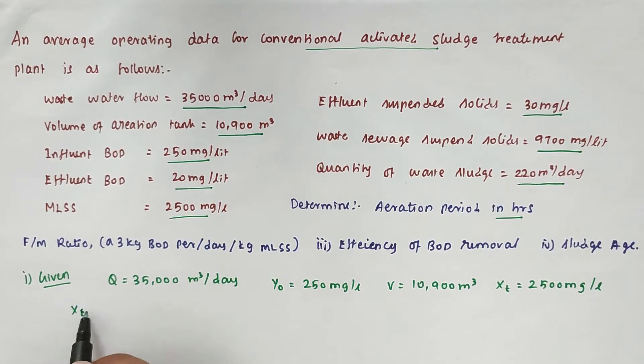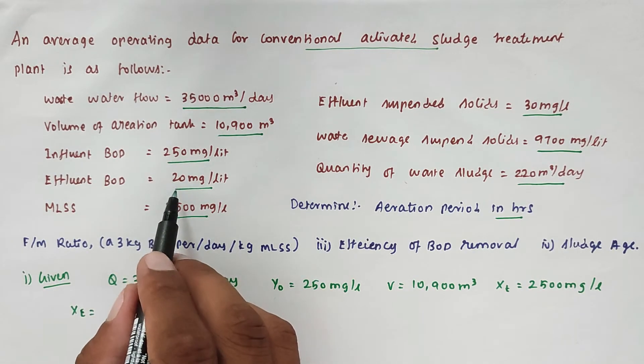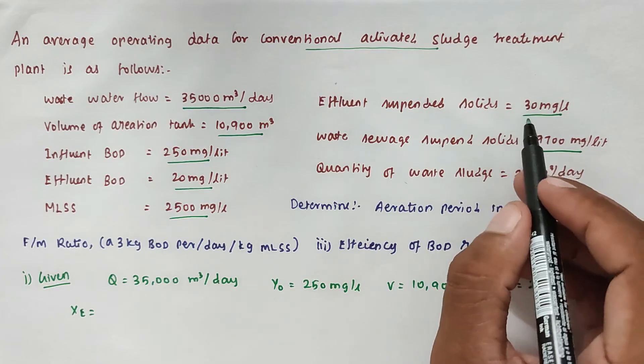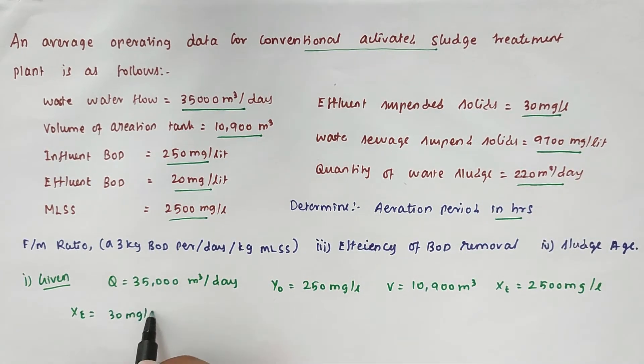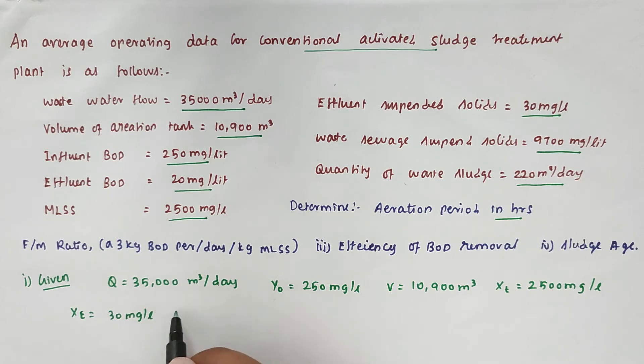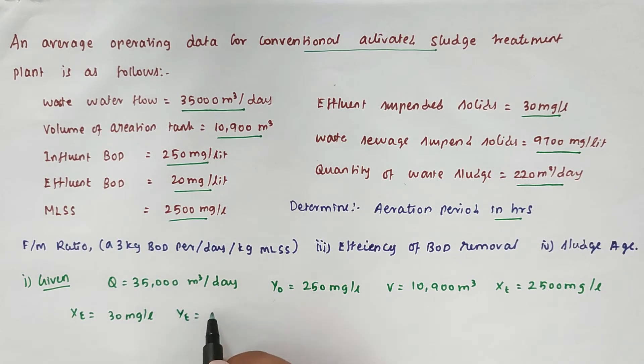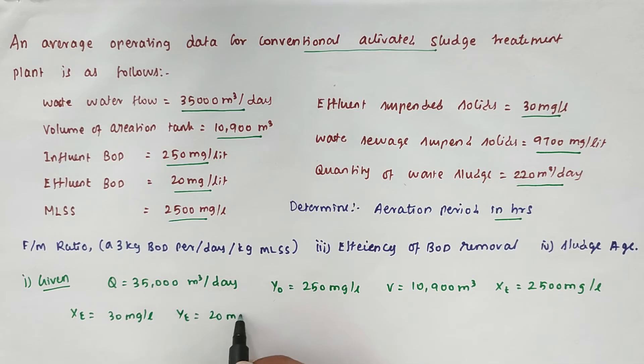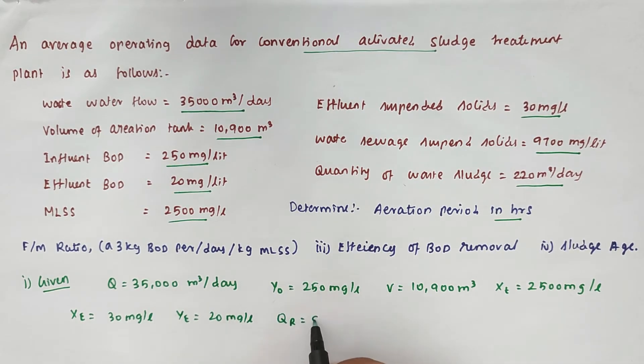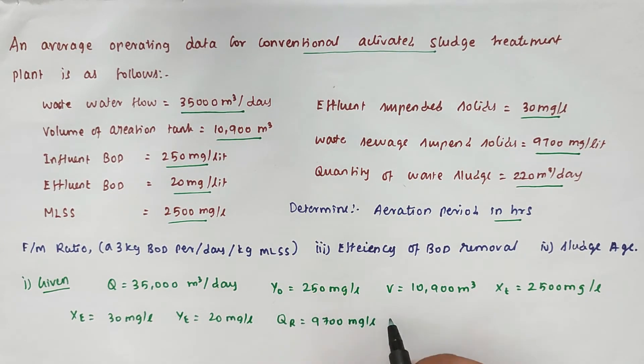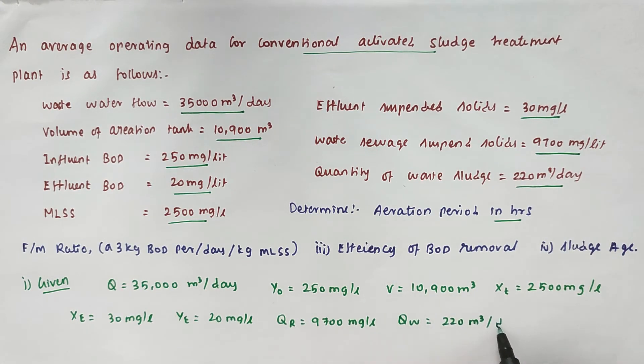XE is effluent suspended solids, that is 30 mg per liter. YE, that is effluent BOD, is 20 mg per liter. QR equals 9700 mg per liter. QW equals 220 m³ per day.